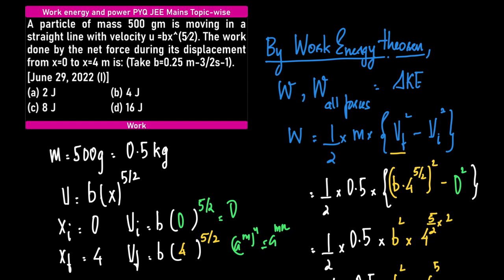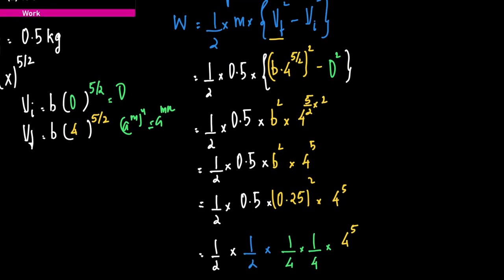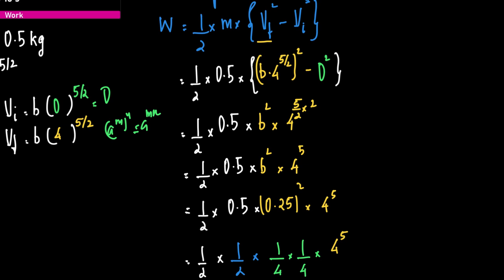So 2 by 2 is 1, and what we get is b² times 4 to the power 5. Now, what is the value of b? It is given to us as 0.25.